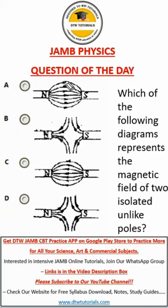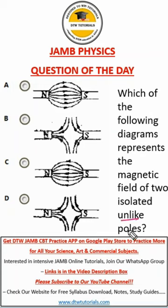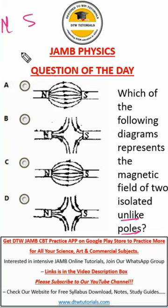Now you can get this question. It says: which of the following diagrams represent the magnetic field of two isolated unlike poles? So when we have the statement 'unlike poles,' it means it's a north and south.